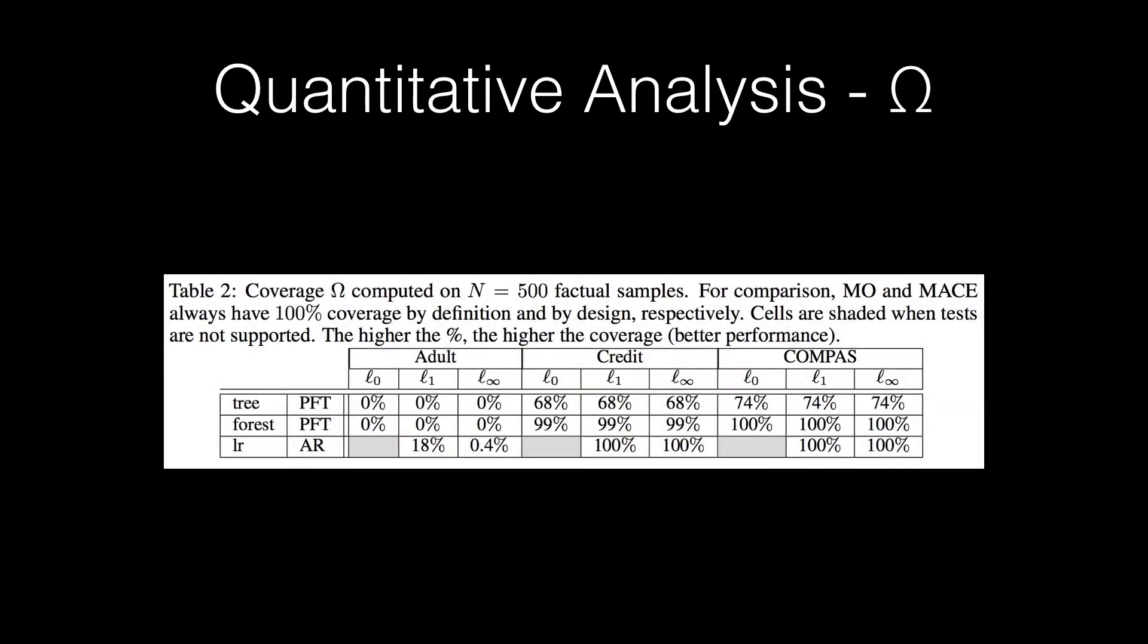First, we look at coverage, specifically data type and data range plausibility. In this table, we have omitted both MACE and the minimum observable method, because by definition and by design they have 100% coverage.